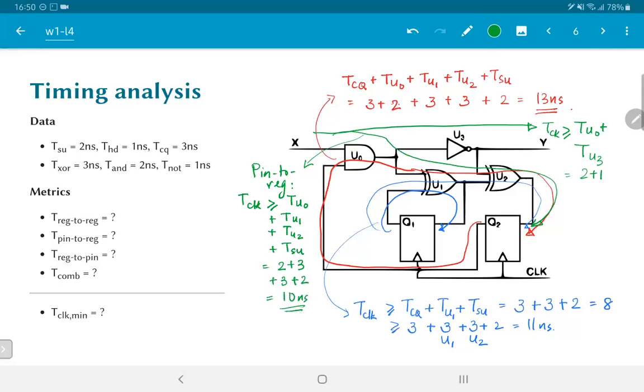By working through all of this, the bottom line is that we find that the largest delay is this value, 13 nanoseconds that we see over here. And therefore, the Tclock minimum value for the Tclock that we can use has to be greater than all the different constraints that we have seen. And the only value that satisfies all of those is to choose 13 nanoseconds. So, what does this mean?